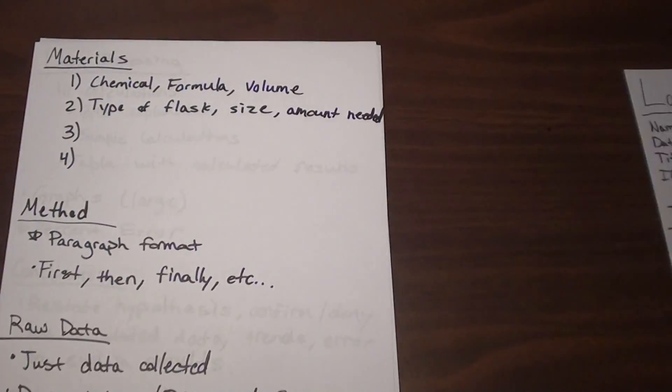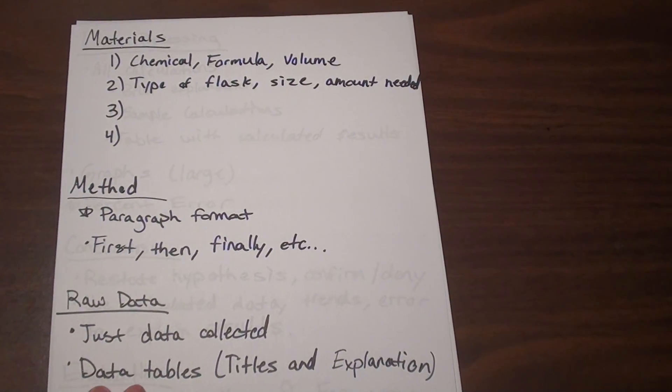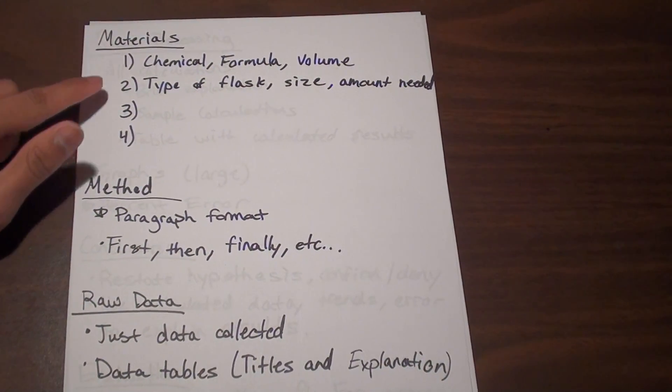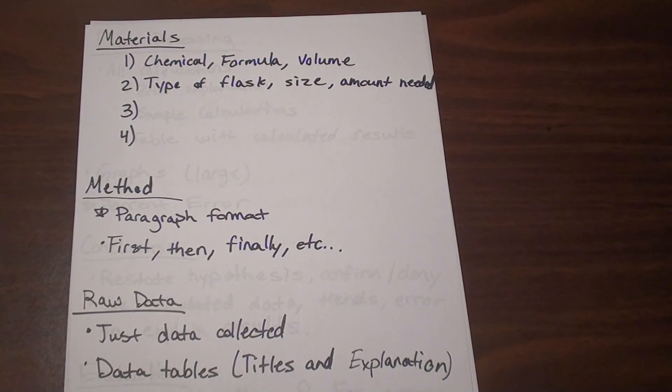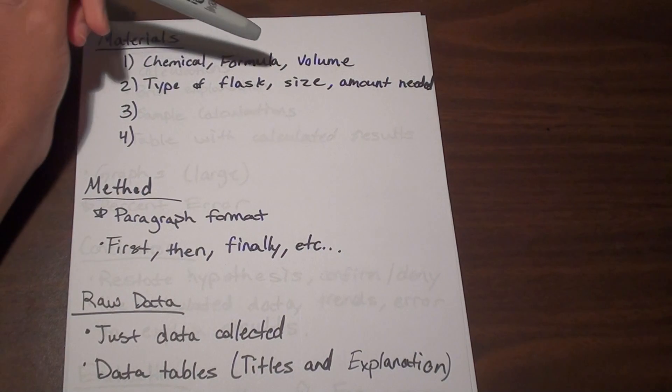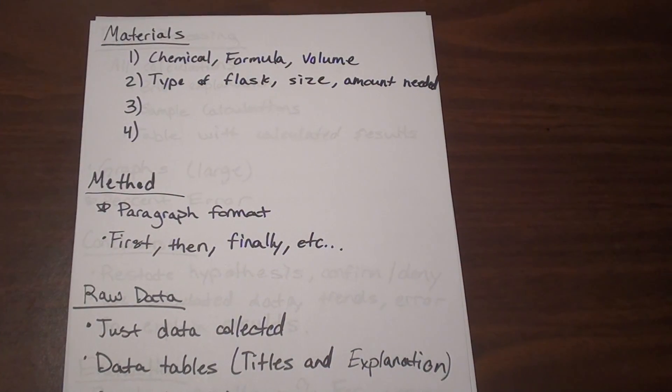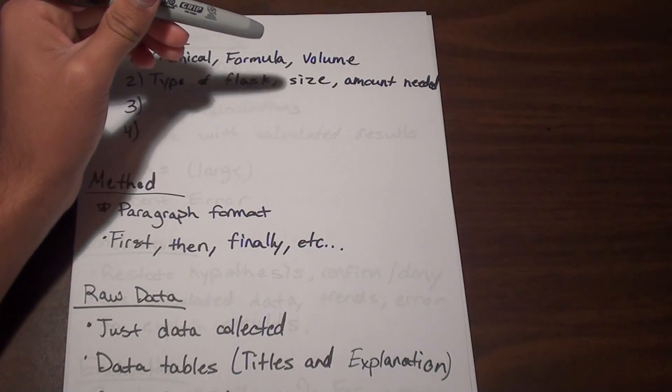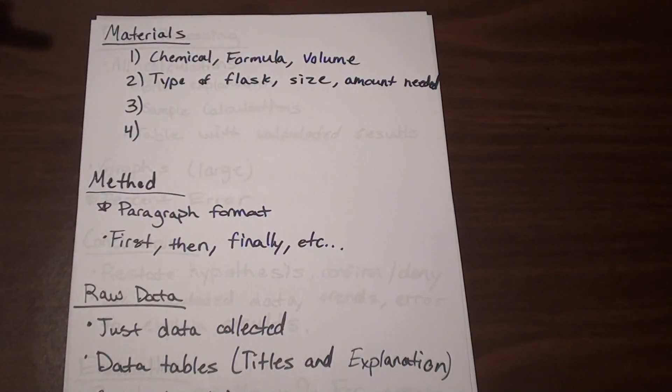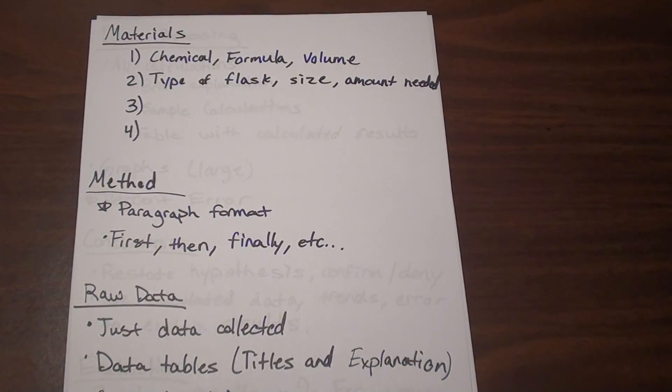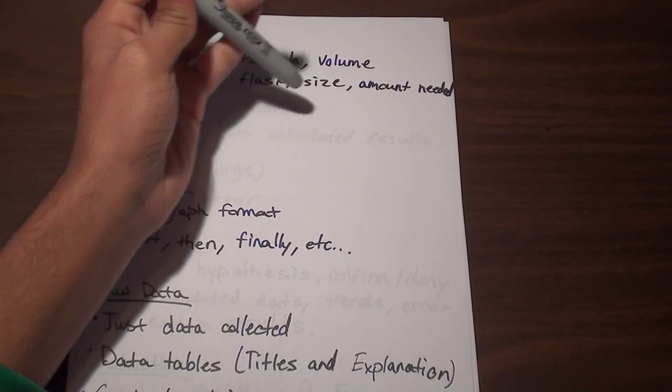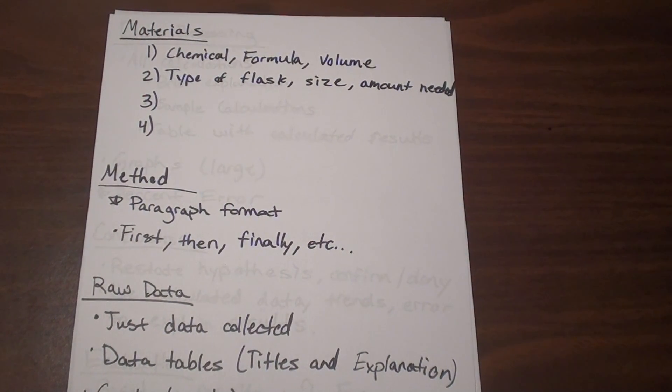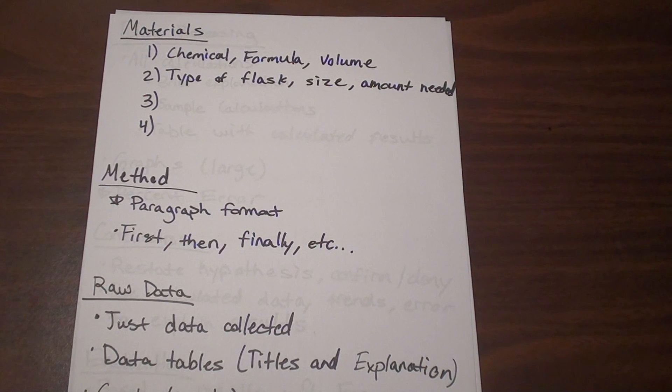So the next thing you're going to put is materials. This is obviously pretty straightforward. It's just going to be a numbered list: one, two, three, four. If you have a chemical, you're going to want to put the name of the chemical, the formula, and how much you used. If it's something else like an Erlenmeyer flask, you're going to want to say Erlenmeyer flask 250 milliliters, and let's say you use three because you had three trials, you're going to put three. Things like that: pipettes, maybe use 10, so you're going to put 10, and so on and so forth. And really just put everything that you used in order to conduct the lab.